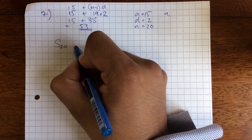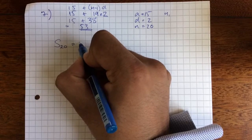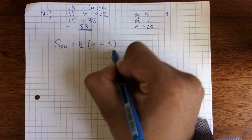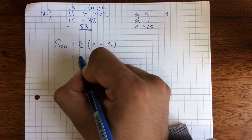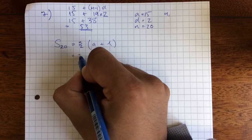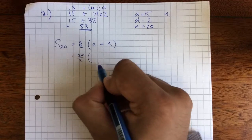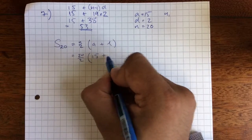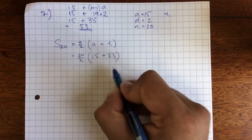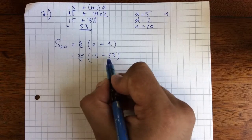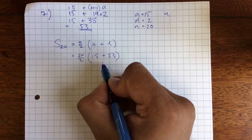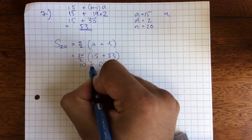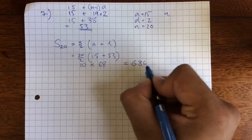I'm going to use the first plus last formula, equals N over 2, A plus L. First plus last equals N over 2, 20 over 2 is 10. Lovely numbers. A, first one is 15, plus last, 53. 15 plus 53 is 68, and that's 10 times 68 equals 680.